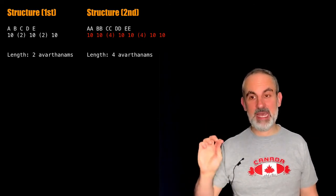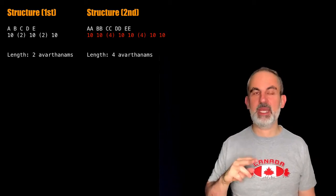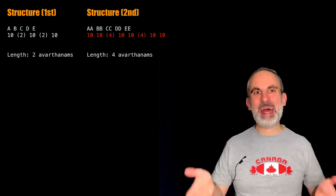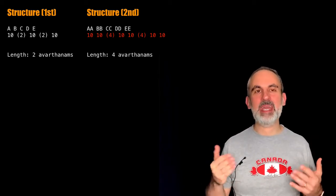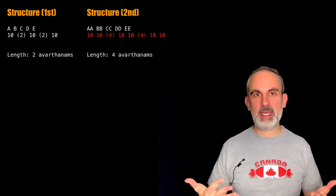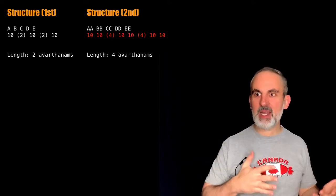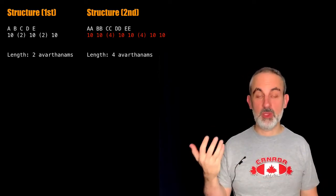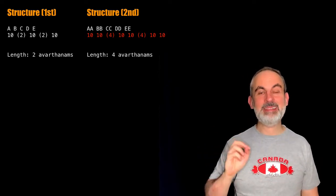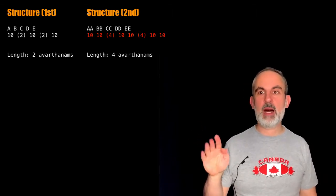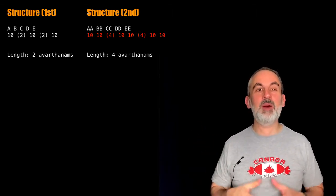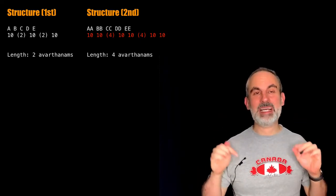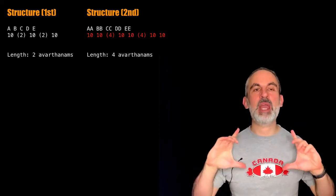So we have 10, 10. But then the gap had a value of 2 yesterday, and today we're not doing 2 gaps of 2 as you might expect. What we're doing is adding them and reciting a gap for 4. That is how we are duplicating all the variables in the korvai, but not exactly in the same way everywhere. So the uttarangam part is 10, 10, 4 gap, 10, 10, 4 gap, and 10, 10. What this means is that the length of today's korvai is exactly twice as yesterday's, because we have duplicated everything.